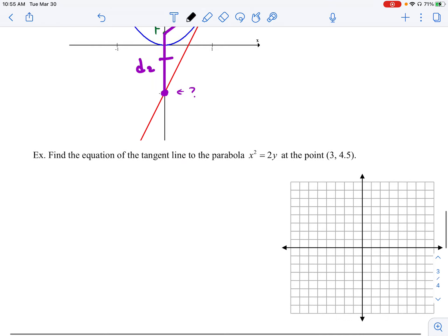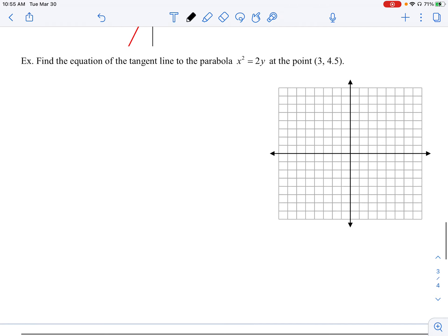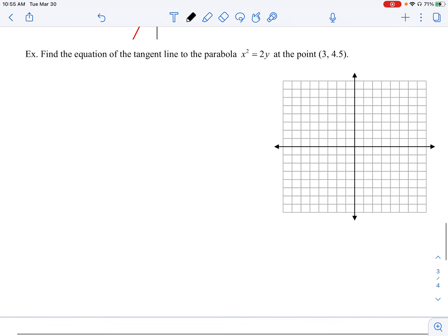Let's find the equation of the tangent line to the parabola x² = 2y at the point (3, 4.5). So the first thing we're going to need to do is get parabola info, like whatever we can glean from our equation.